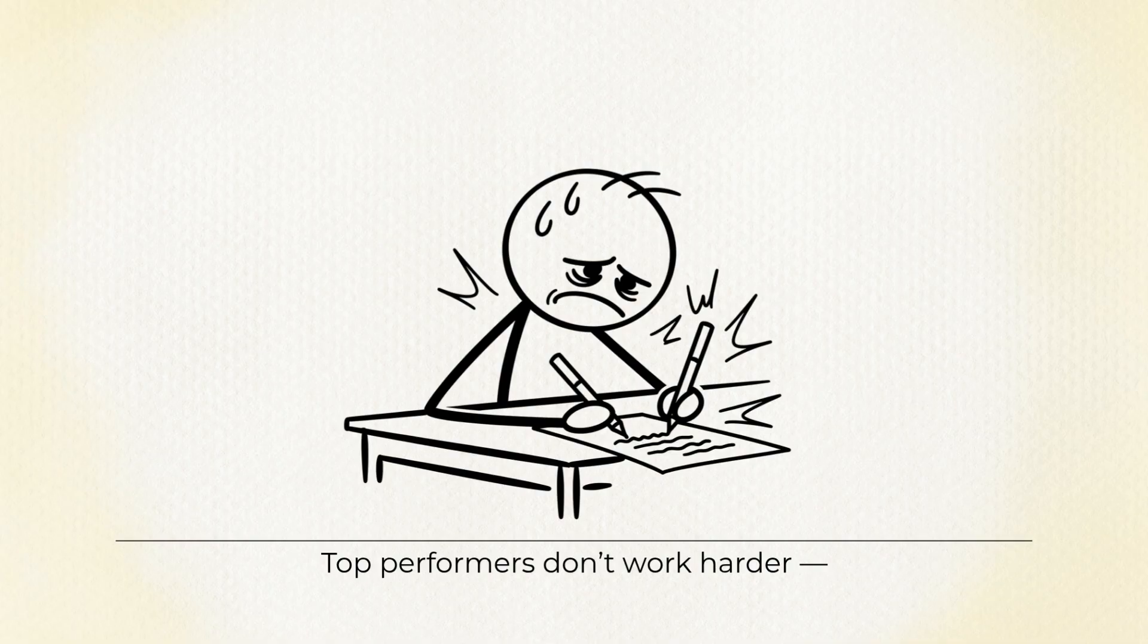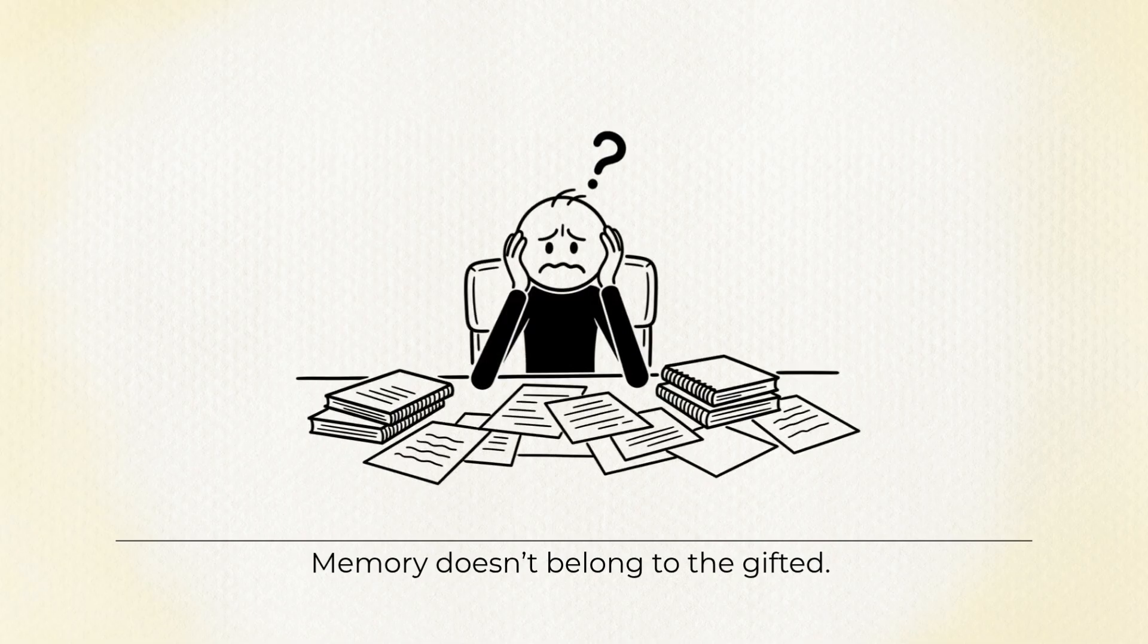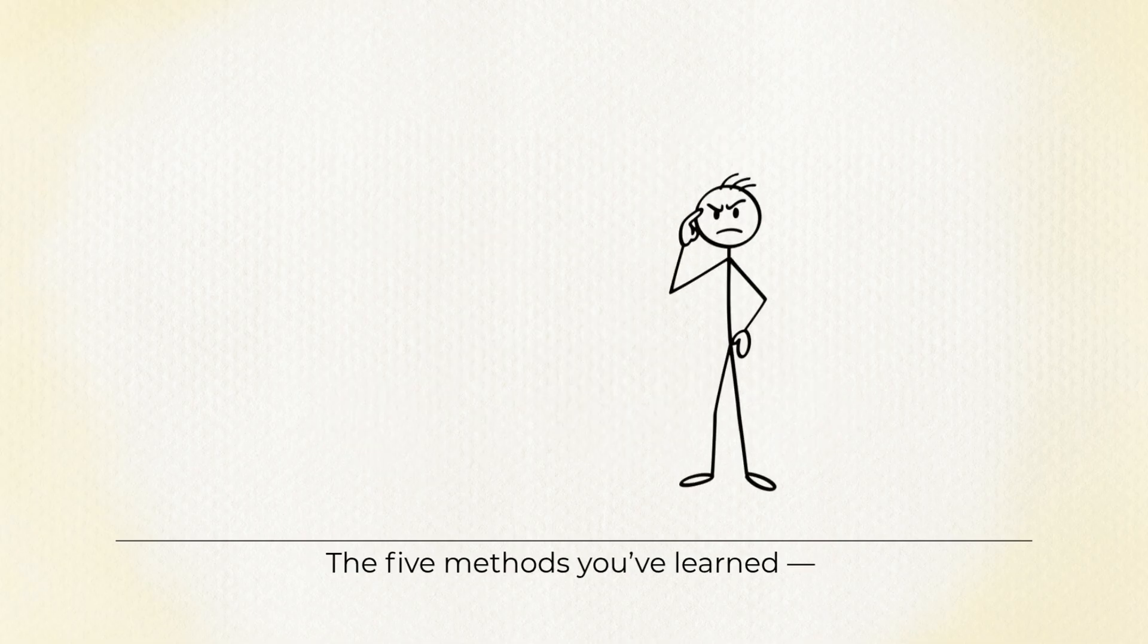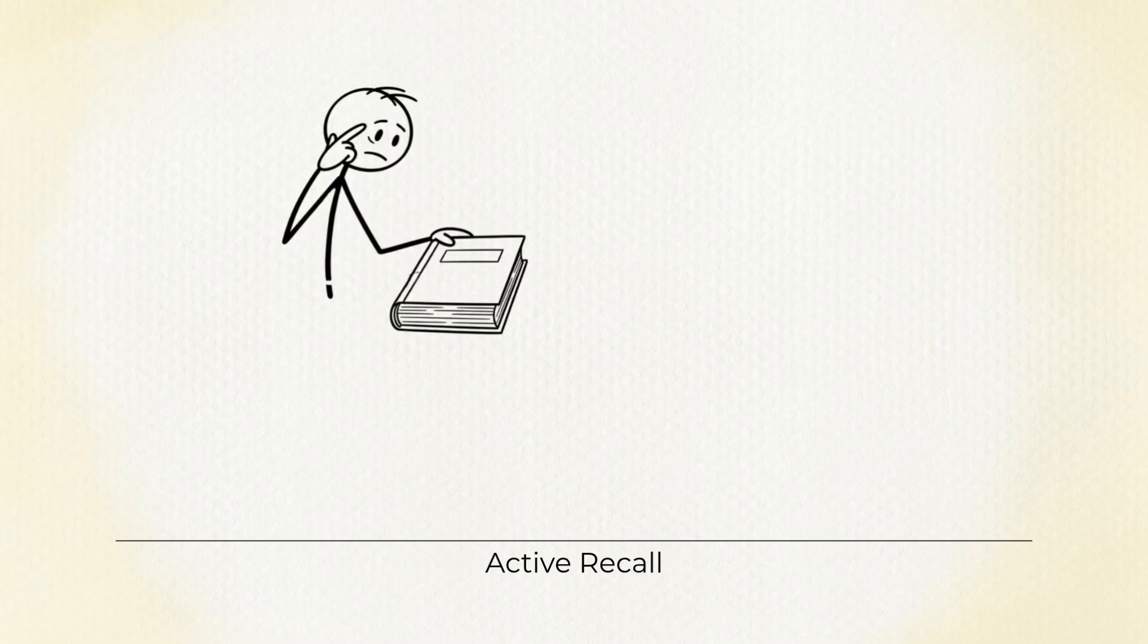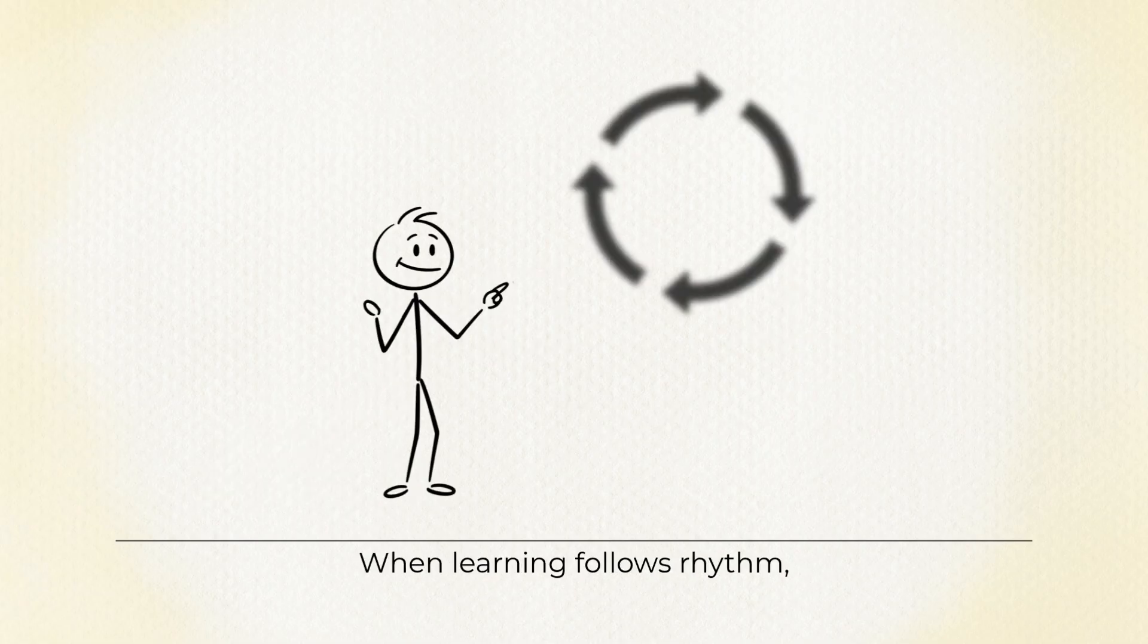Top performers don't work harder, they design smarter. Memory doesn't belong to the gifted, it belongs to the organized. The five methods you've learned: active recall, spaced repetition, visual connection, emotional state, and structured input form a complete cycle.